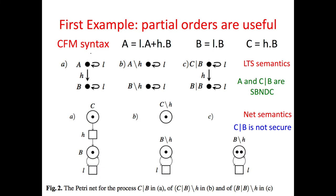Consider this example. The term A is SBNDC — the system before action H can perform the same low behavior as the system after H. Also, the system C parallel B is SBNDC for the same reason. However, this system is not secure. If we look at its net semantics, we can realize that the low behavior before H, which is the net in B, is not fully concurrent equivalent to its low behavior after H, which is the net in C, as only the latter can perform the two low actions in parallel.